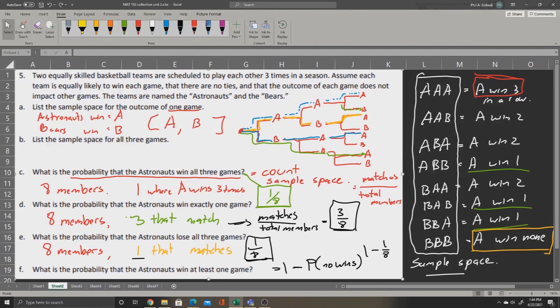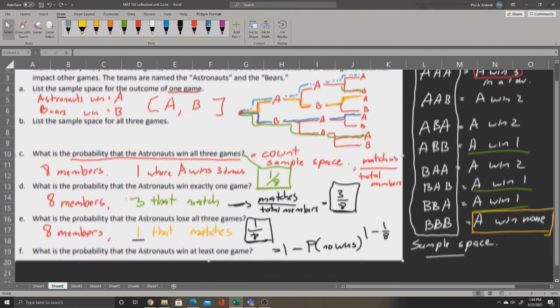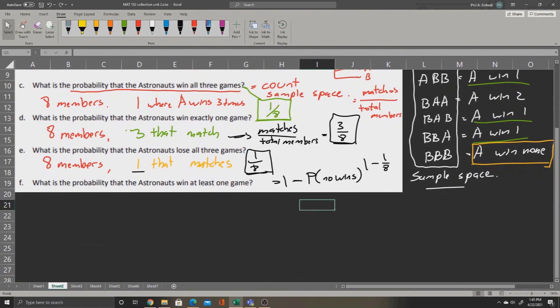Now to calculate the actual answers in decimal form, we can simply use Excel. We'll make some room down at the bottom, and we'll type them. Question C gave us an answer of one over eight, so we'll type equals one divide eight. When we press enter, we get point one two five.